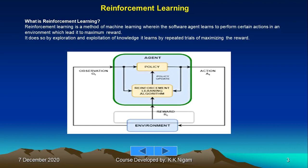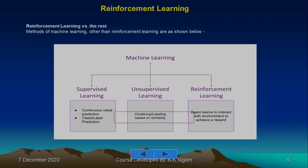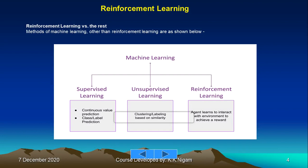Reinforcement learning is a method of machine learning where a software agent learns to perform certain actions in an environment which lead it to maximum reward. It does so by exploration and exploitation of knowledge, learning by repeated trials of maximizing the reward.